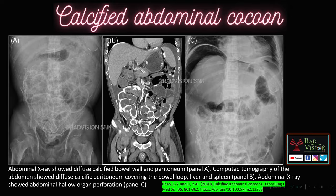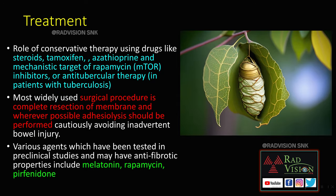We have seen different entities mimicking EPS and various cocoons in the abdomen. Treatment for EPS includes conservative options — steroids, tamoxifen, azathioprine, and mTOR inhibitors — and anti-tubercular therapy for tuberculosis cases. Surgical treatment involves complete resection of the membrane and adhesiolysis. Recent drugs include melatonin, rapamycin, and pirfenidone.